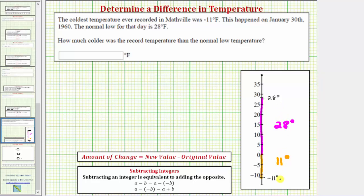This tells us negative 11 degrees is 39 degrees colder than 28 degrees. So looking back at our question, how much colder was the record temperature, which was negative 11 degrees, than the normal low temperature of 28 degrees? And now we know negative 11 degrees is 39 degrees colder than 28 degrees.